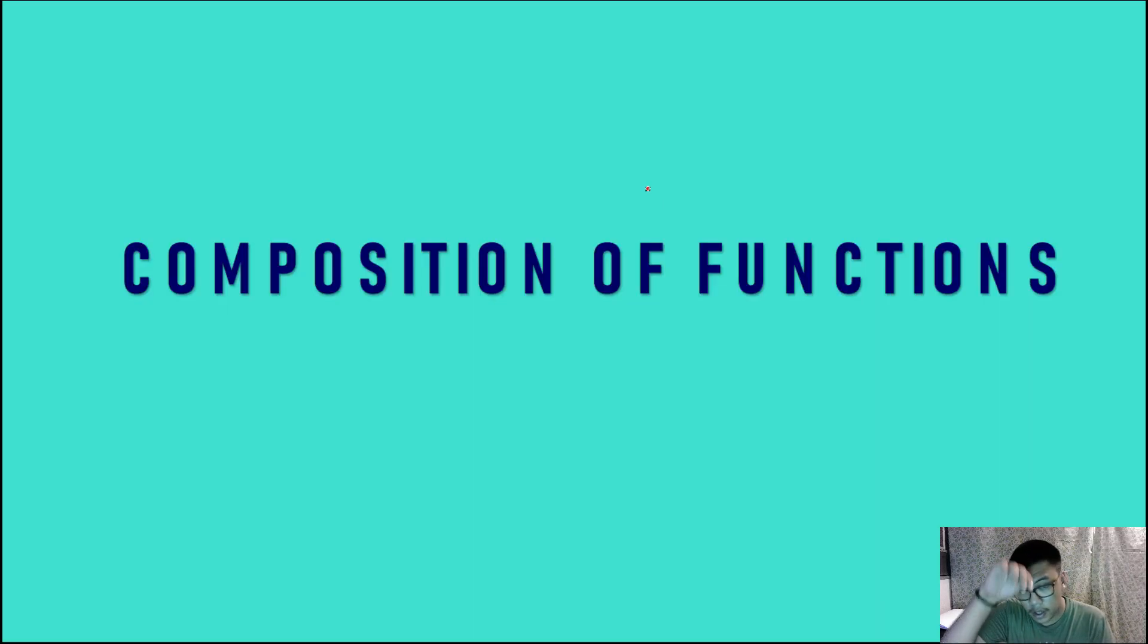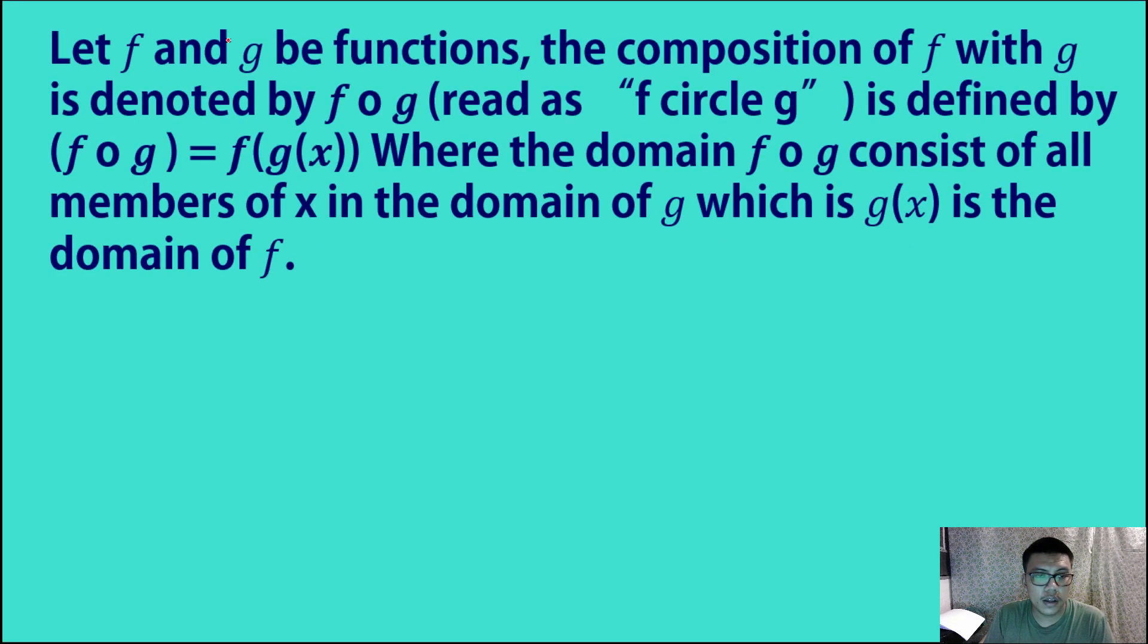Let's have now the composition of functions. Let f and g be functions. The composition of f with g is denoted by f circle g. This is read as f circle g.